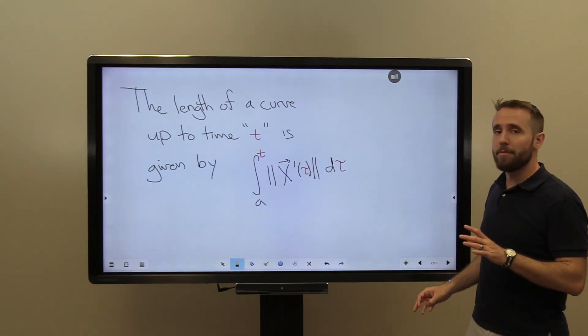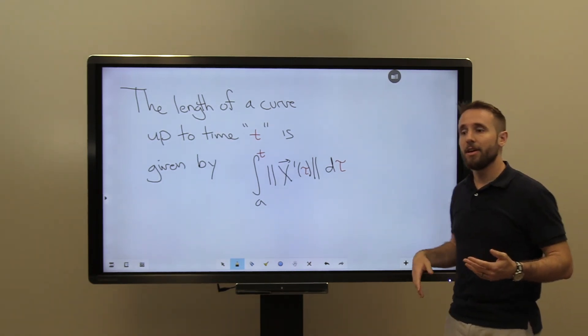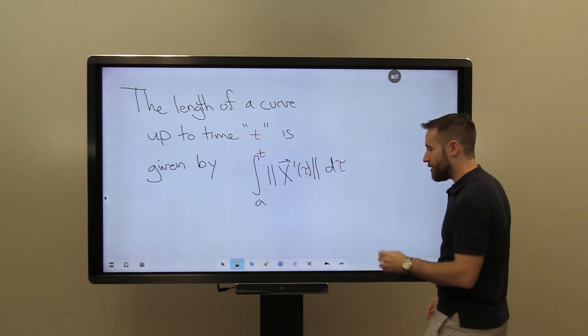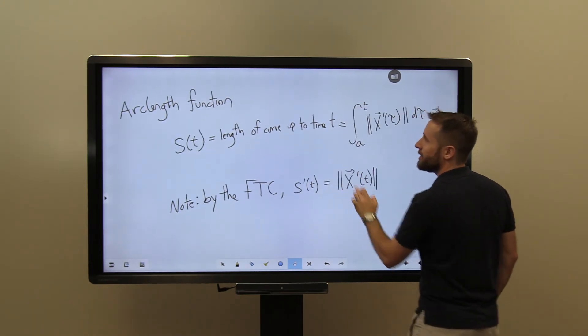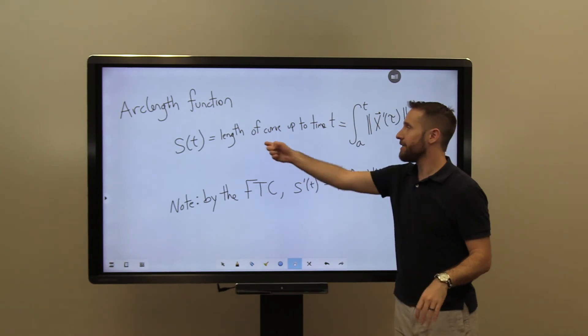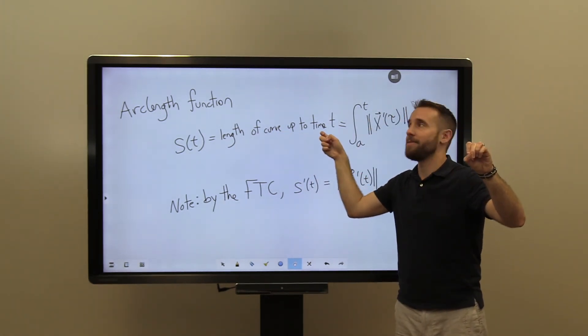Alright, and so we have a name for this function. We call this the length of a curve up to time t. We call this the arc length function up to time t. And we typically denote it by an s of t. So here we have our arc length function, where s of t, this function that we've just defined, is the length of the curve as it's been carved out up to time t.